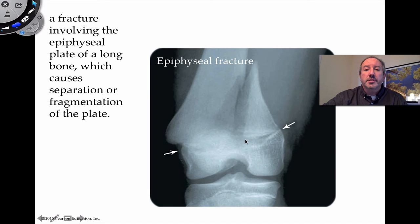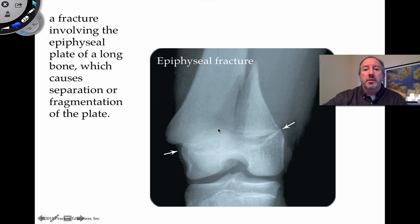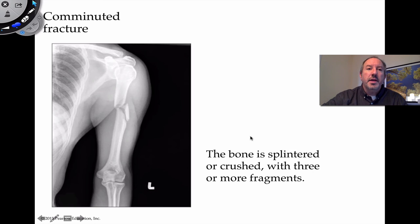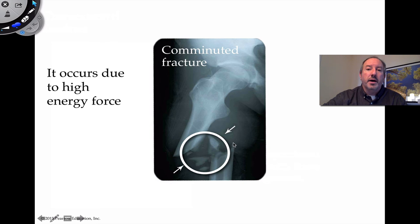The epiphyseal fracture can be more serious, especially in a young person if it breaks up the epiphyseal growth plate — it really could affect whether the tissue is going to continue to grow. Physicians are more concerned about this type; it can cause a separation of the plate itself. The comminuted fracture is where the bone is really crushed into more fragments. As you can see here, the humerus is broken into several small pieces or fragments. This occurs due to high energy force and is a major injury.